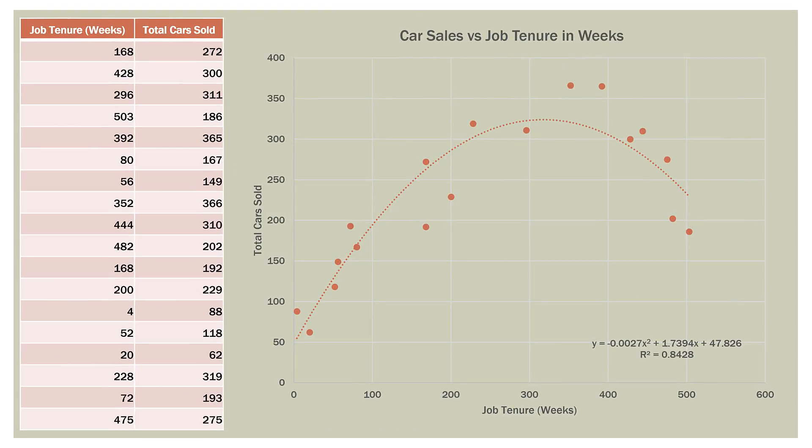Here is our data again. Now we have to pick a knot value. I'm going to eyeball it rather than go through an iterative process. Looking at the data, I have chosen a knot value of 350 weeks on the job. It seems that on the left-hand side that's one linear equation, and on the right-hand side going down that is another linear equation. So for this example, we'll choose a knot value of 350 weeks on the job.